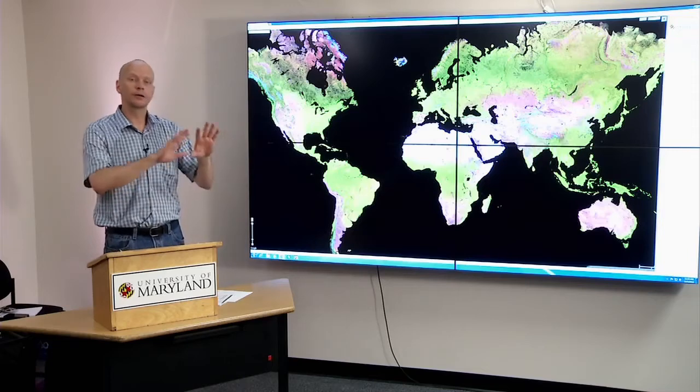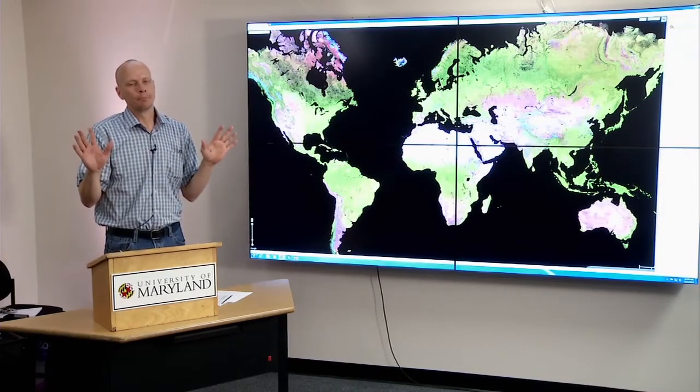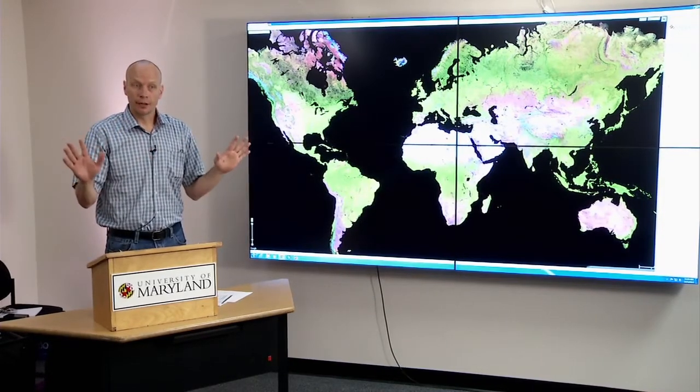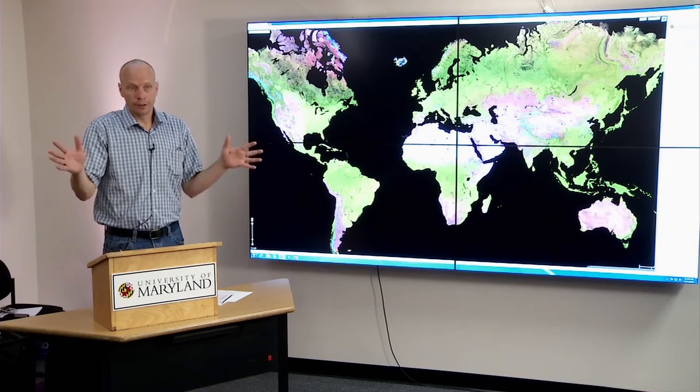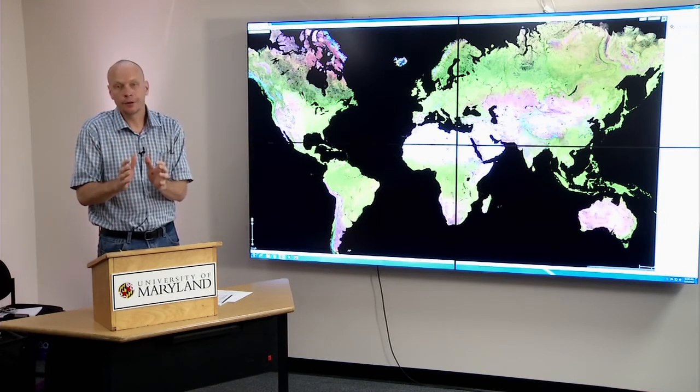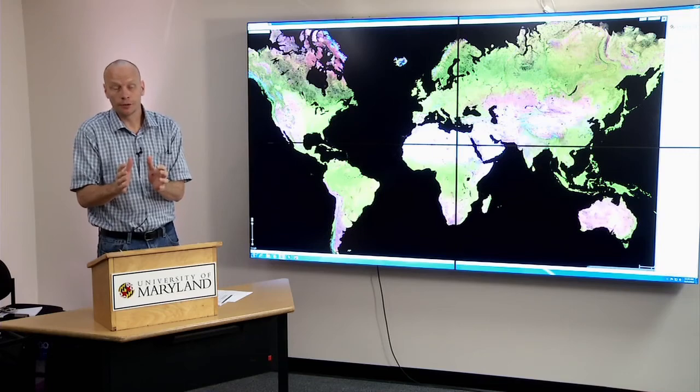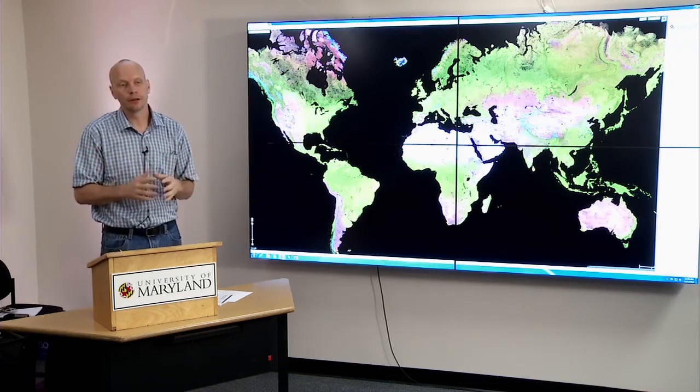And what we like about it, if we're working at 30 meters globally, our history has been to work at global scale. And you get a globally consistent product and you can say what's happening in the earth in its entirety. But with 30 meter, we can cut out any particular place and it should be locally relevant. So we have a globally consistent and locally relevant.